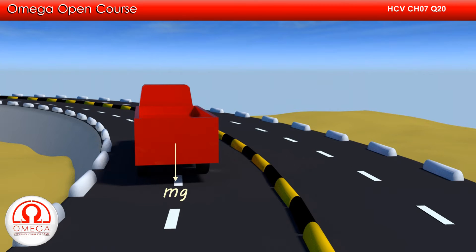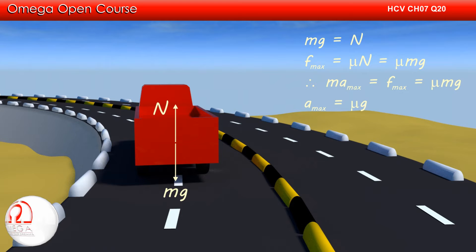Since the coefficient of friction is μ, the maximum value of friction acting on the car is μmg, which implies the maximum acceleration of the car is μg.